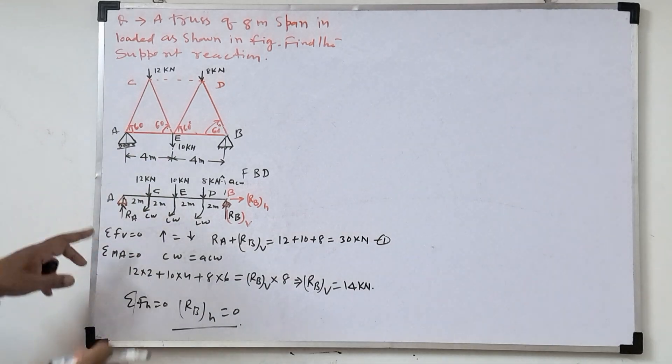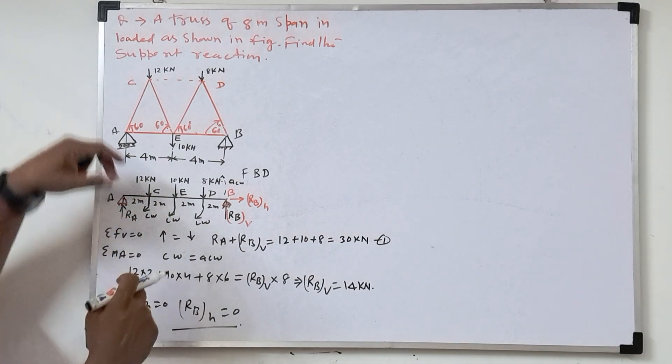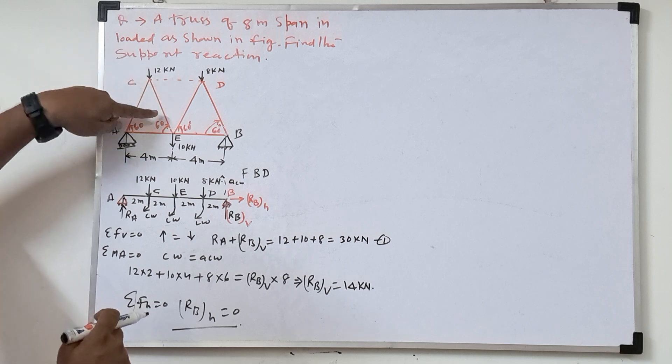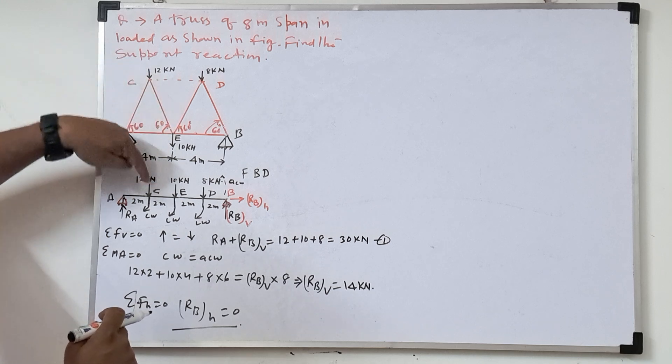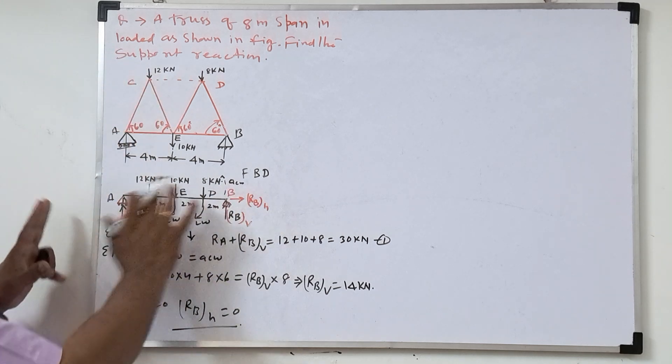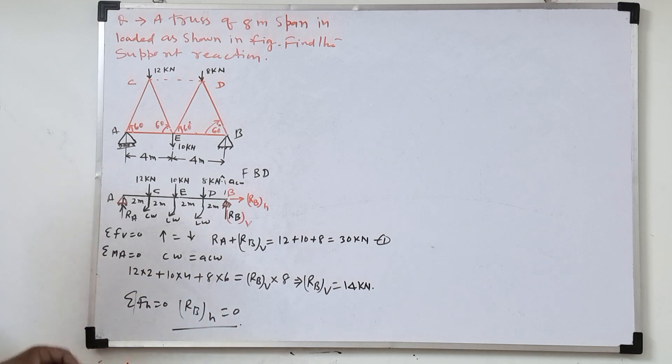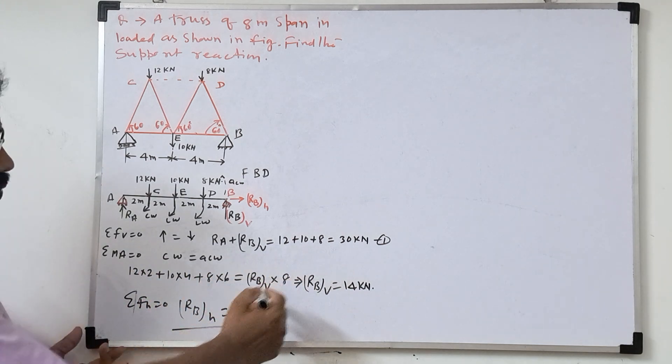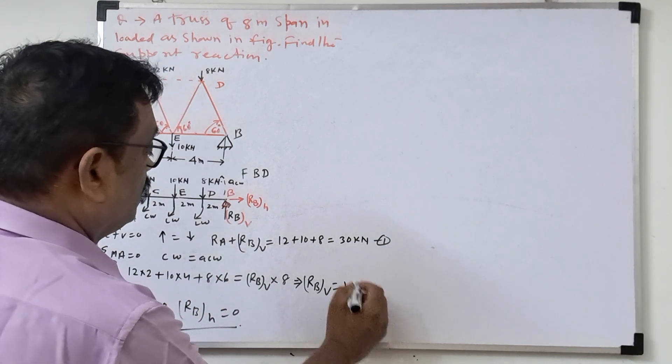So based on the three equilibrium equations, we know the support reactions. Here main thing, what you have to concentrate? If equilateral triangular, this load will act in the middle. So this is the free body diagram. Once I draw, as usual, our support reactions, what is the rule? So we can solve.